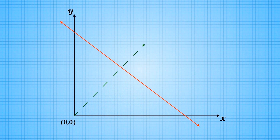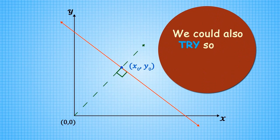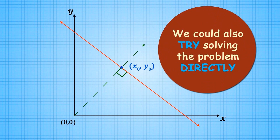To solve this problem, you found the perpendicular line that goes through the origin and calculated the intersection. However, we could also try solving the problem directly.